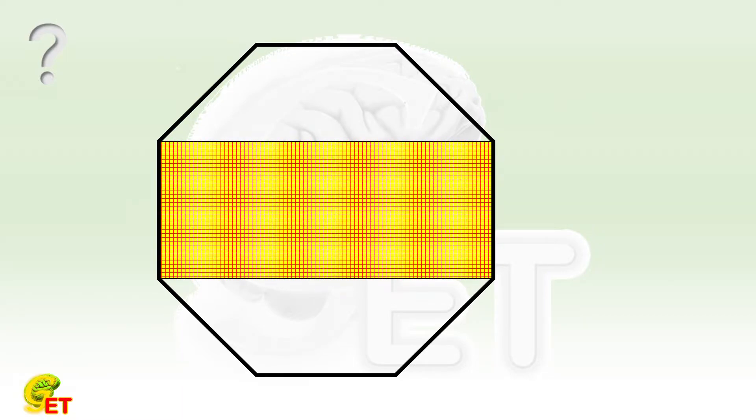we start from a regular octagon. Connecting a pair of opposite sides, we can construct a rectangle. Can you calculate the ratio of the areas between the rectangle and the octagon? Why not give a try, and we will come back soon.